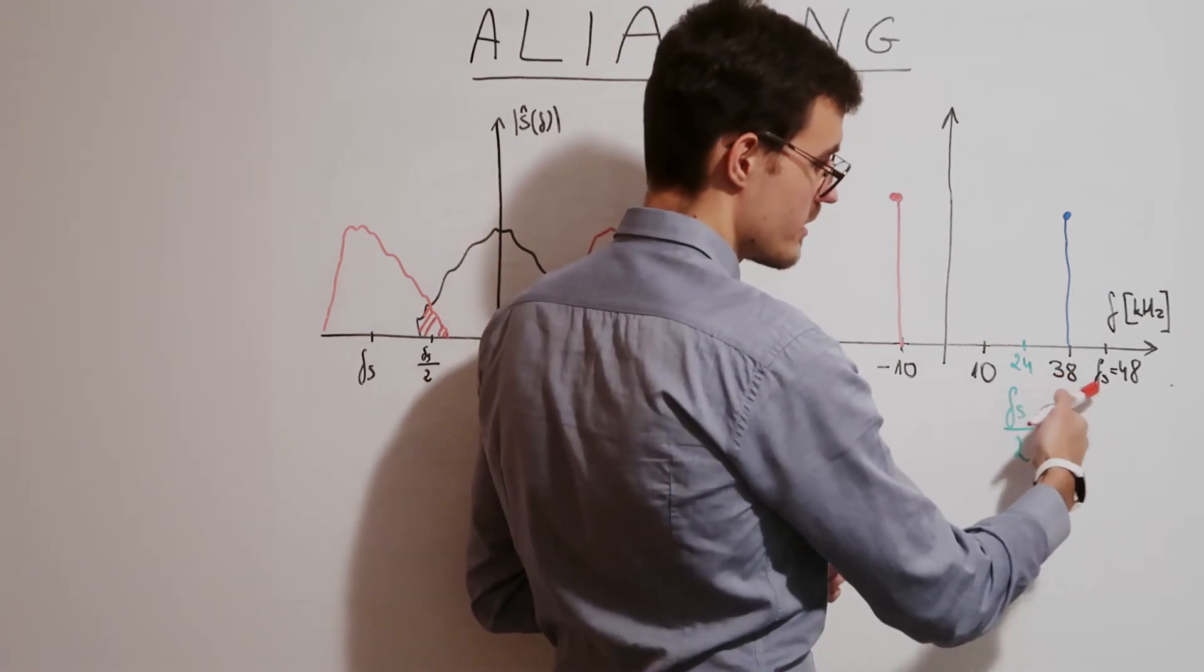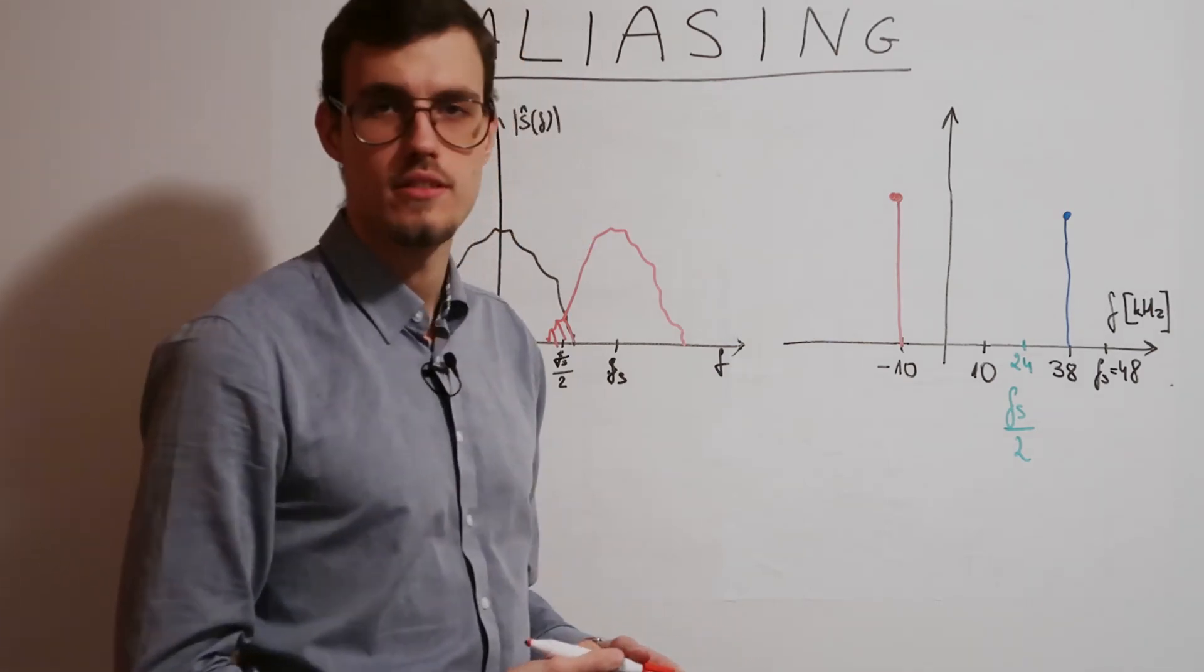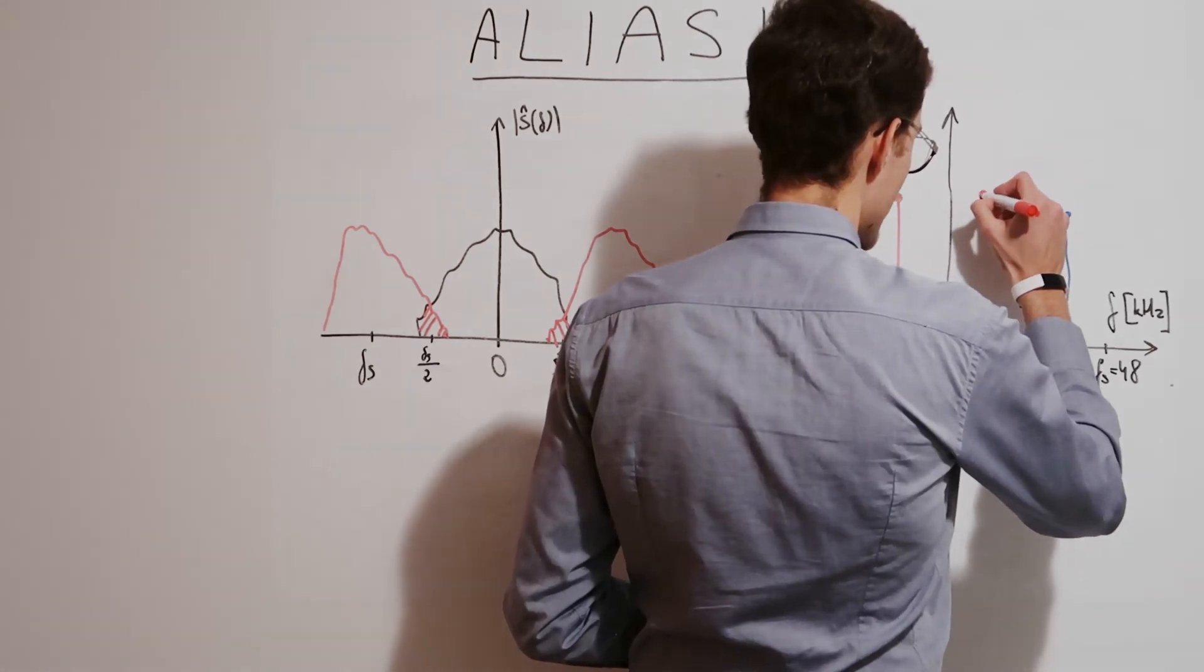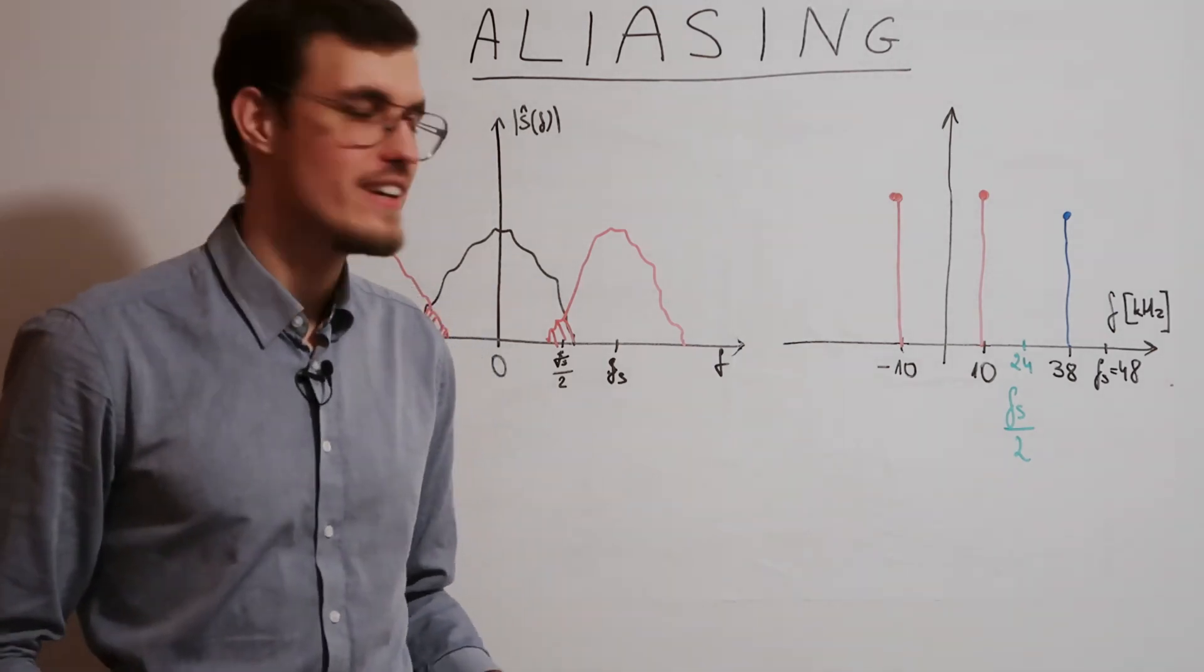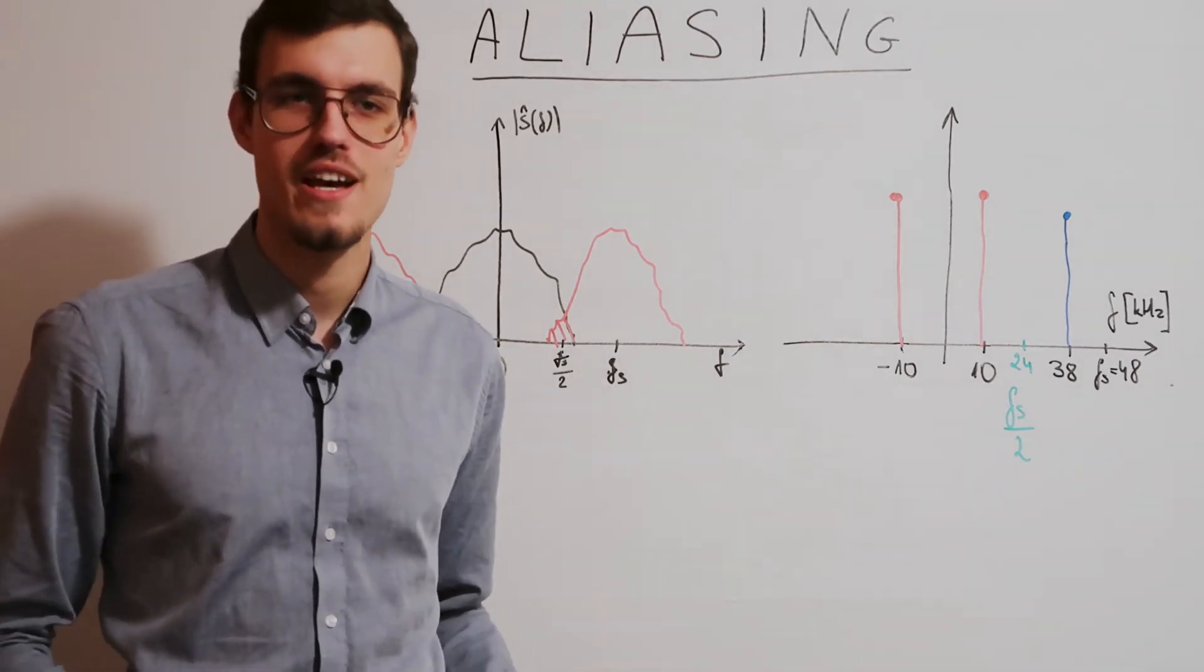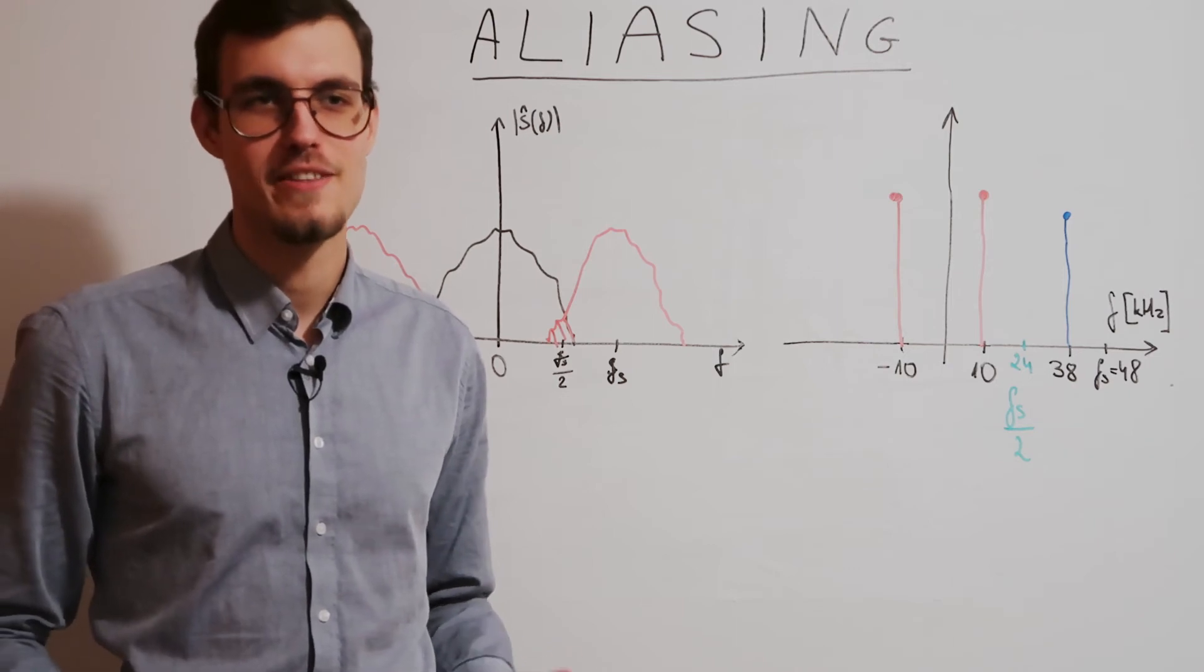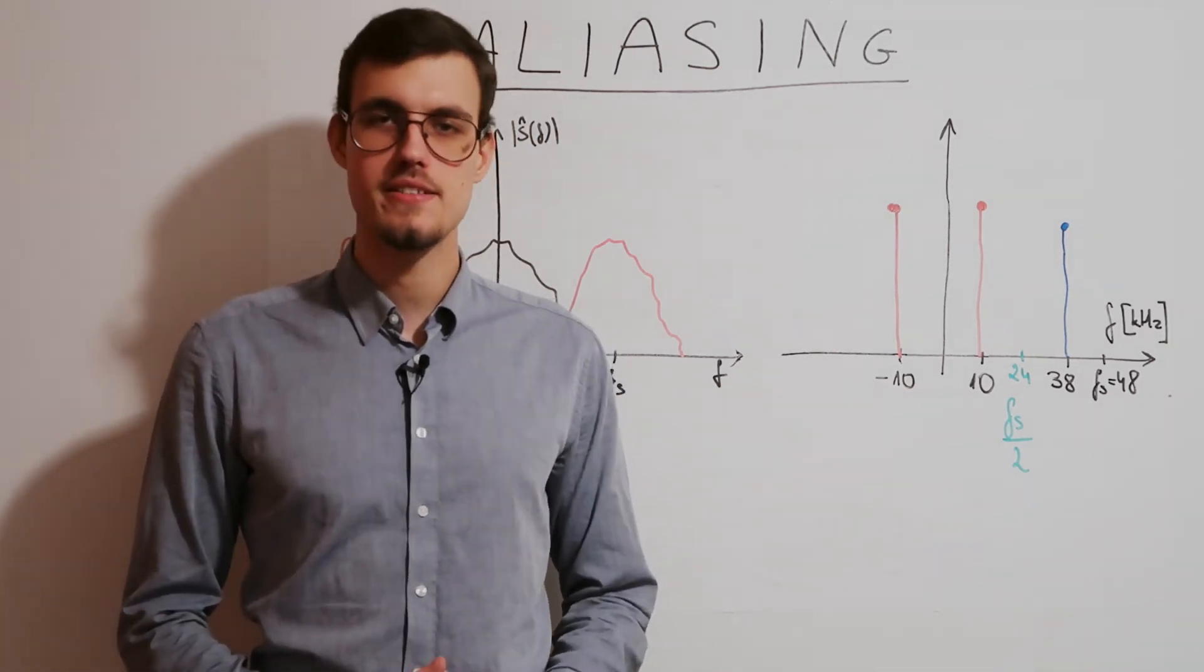At exactly 38 minus 48 kilohertz. But since our signal is real valued, the negative frequency will be reflected back to the positive frequency. And what will happen is that after reconstruction we'll get a 10 kilohertz frequency which is in the audible range. So although we sampled an inaudible signal, after reconstruction we got an audible signal. And that's the power and misfortune of aliasing.